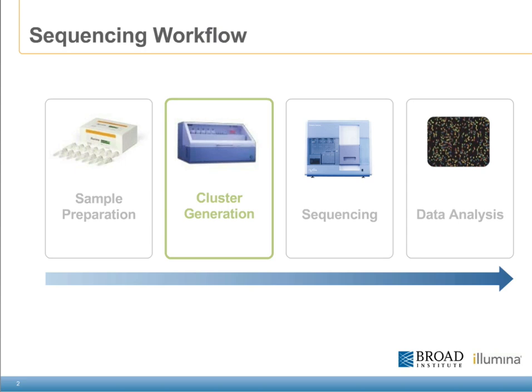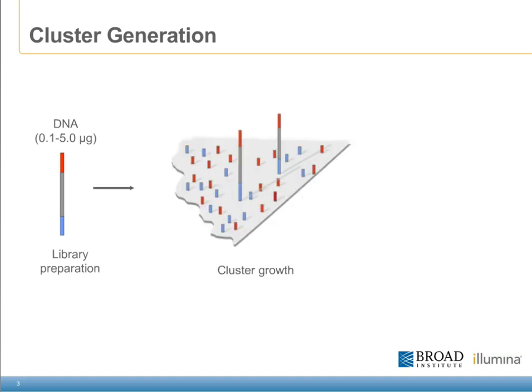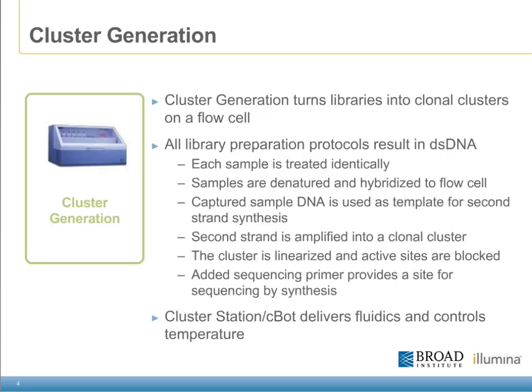Cluster generation is the second step in the Illumina sequencing workflow. We've already created a library, and now we're going to hybridize it to our flow cell to surface-bound oligos that are complementary to the adapters we put on our library inserts. From there, we'll do the bridge amplification process to create clusters and move on to sequencing for detection.